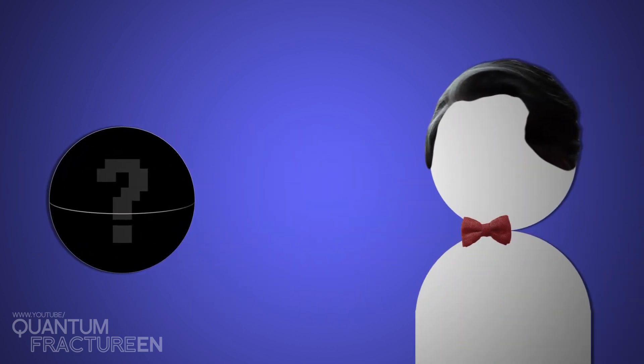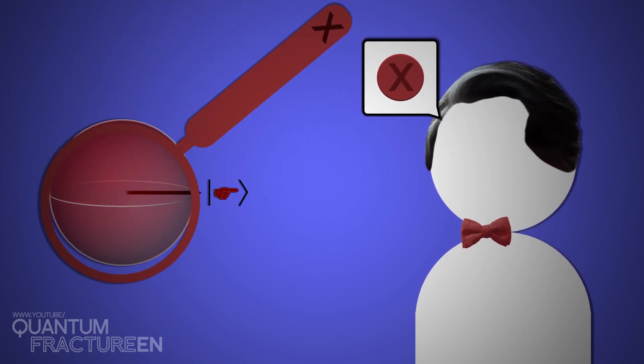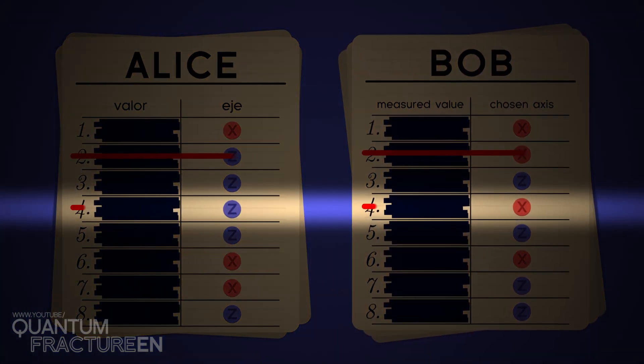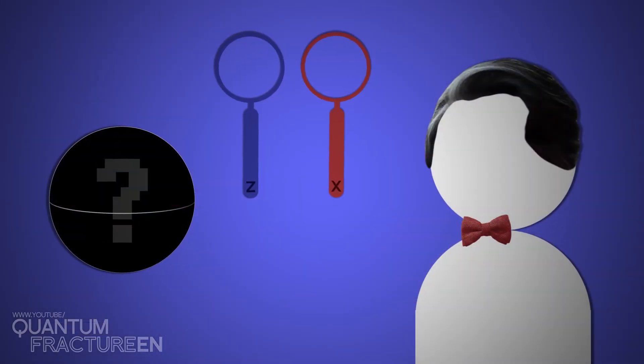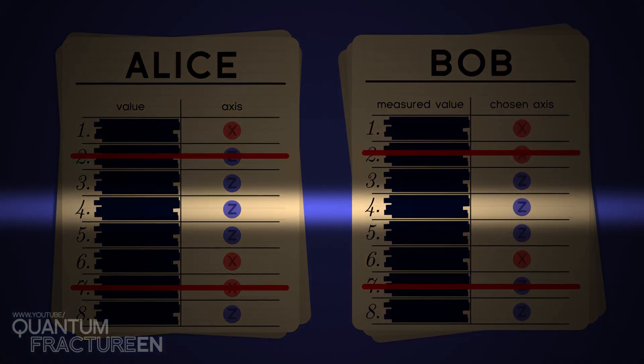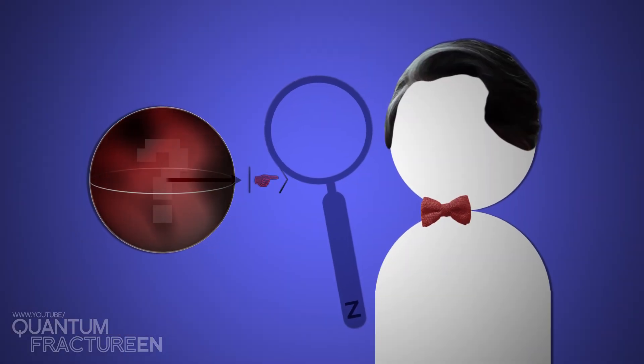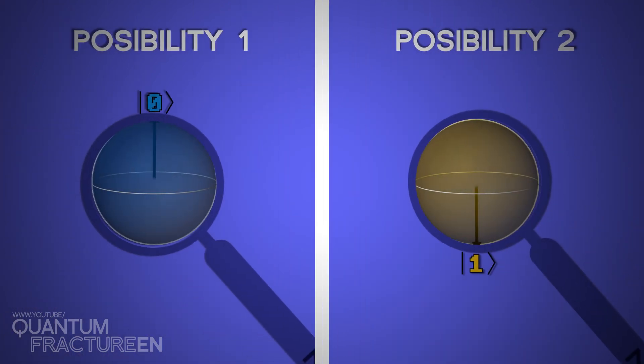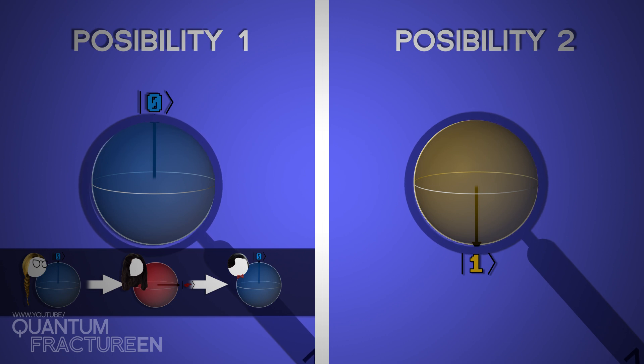Now Bob, unaware of what Eve has done, has chosen which axis to measure it on. If Bob chooses x, Eve can breathe a sigh of relief. When he and Alice compare their results, that one will be eliminated because their axes don't match, and Eve's action goes unnoticed. But if Bob decides to measure the qubit on the z-axis, when they compare axes, they'll mark it as correct and keep it on the list. Now Eve's in hot water. By measuring the right state on the z-axis, Bob will obtain one of two possible states, zero or one. If it's zero, Eve's in the clear. Alice will see that she prepared that qubit in zero state, and Bob measured it in zero state. So far so good. Eve's devious tricks won't show up in the results.